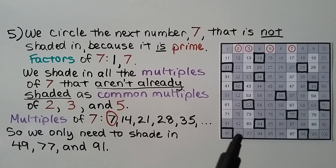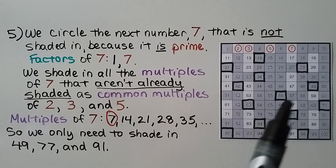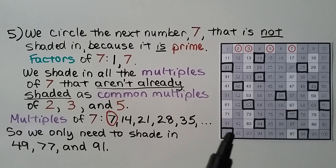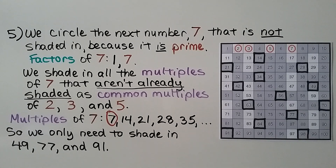Because of those common multiples, we only need to shade in the 49, the 77, and the 91. All the rest were already shaded in as multiples of the previous prime numbers.